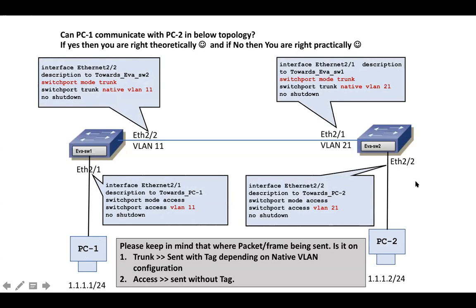Let's trace the packet walk. Traffic is generated from PC1. As soon as EVA Switch 1 receives traffic on Ethernet 2/1, it knows it is for VLAN 11. While sending over the trunk port, it checks: the traffic is on VLAN 11 and the native VLAN is also 11 — so it will not insert the tag. When EVA Switch 2 receives the untagged frame on the trunk, it assigns it to native VLAN 21 and forwards accordingly.